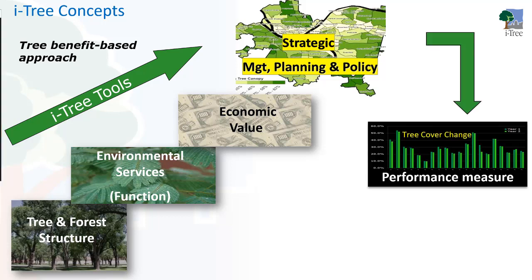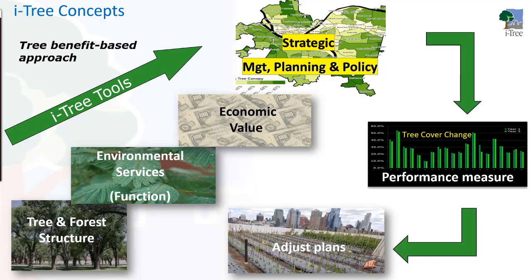But it doesn't stop there. We also have to ask whether our decisions and plans are effective. So we want to use iTree for performance measurement — for example, has canopy changed over time? If not, there may be reasons to make changes in the plans and adjust our efforts as needed, and then we can start to cycle over again.